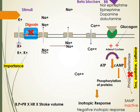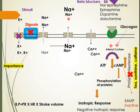Blocking the Na/K ATPase leads to blocking of calcium and potassium influx into cells. Therefore sodium cannot exit, so intracellular sodium levels increase. Once intracellular sodium is raised, through the ion exchange pathway, sodium goes out and calcium comes in. This increases cytosolic calcium levels, which leads to an inotropic response — because calcium is essential for myocardial contraction.